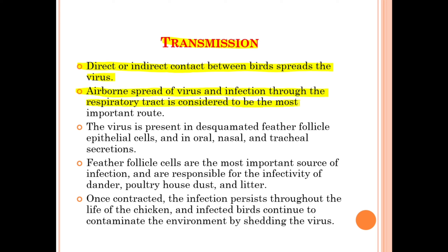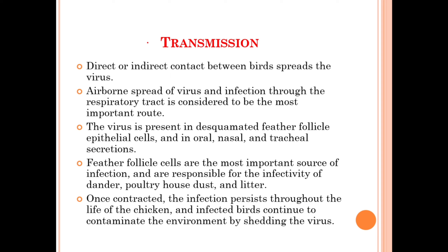The virus is present in the desquamated feather follicle epithelial cells and in oral, nasal, and tracheal secretions. The feather follicle cells are the most important source of infection and are responsible for the infectivity of the poultry house dust and litter. Once contracted, the infection persists throughout the life of the chicken, and infected birds continue to contaminate the environment by shedding the virus.